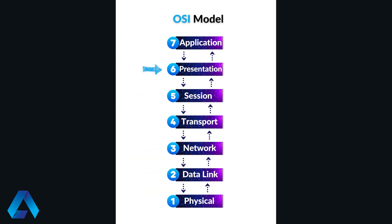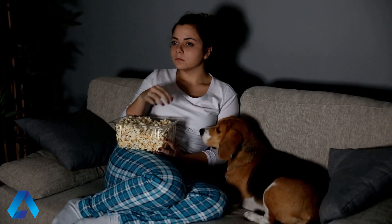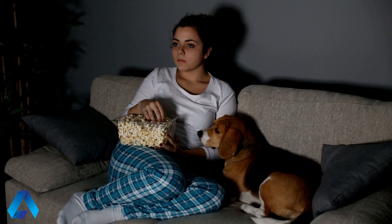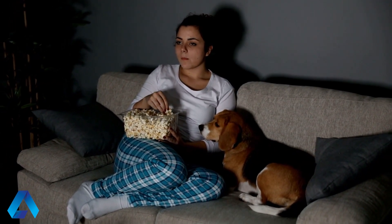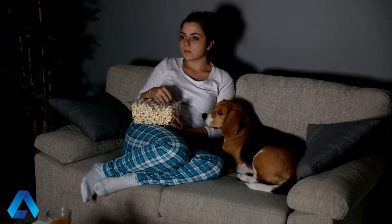Layer 6, presentation. This layer is responsible for the formatting and presentation of data, including encryption, compression, and conversion of data formats. Remember the last time you watched a late night movie over a streaming service? Before you could watch the video on your TV screen, the video needed to be compressed and encoded for transmission over the internet.